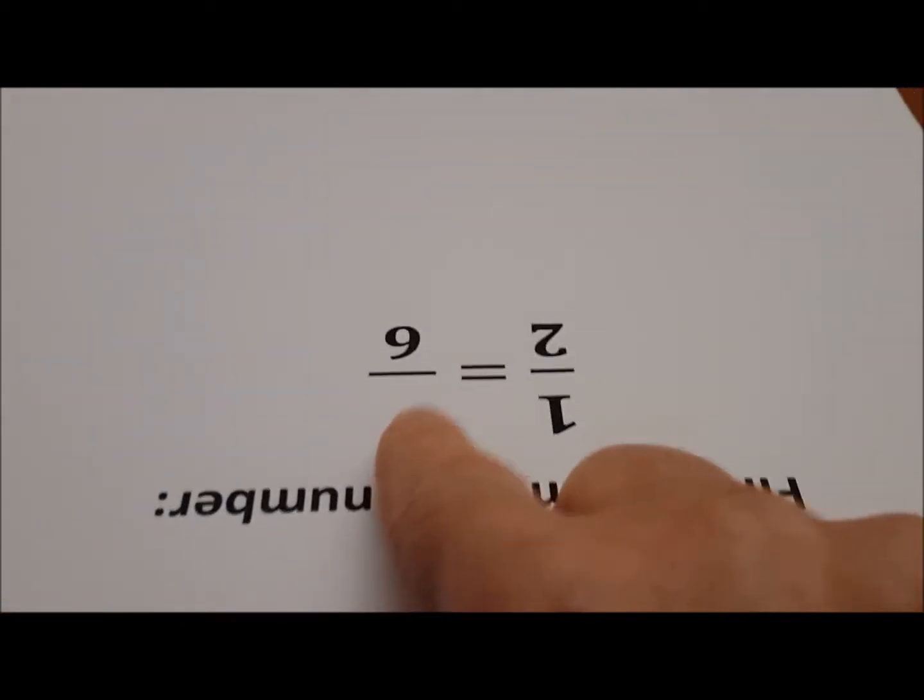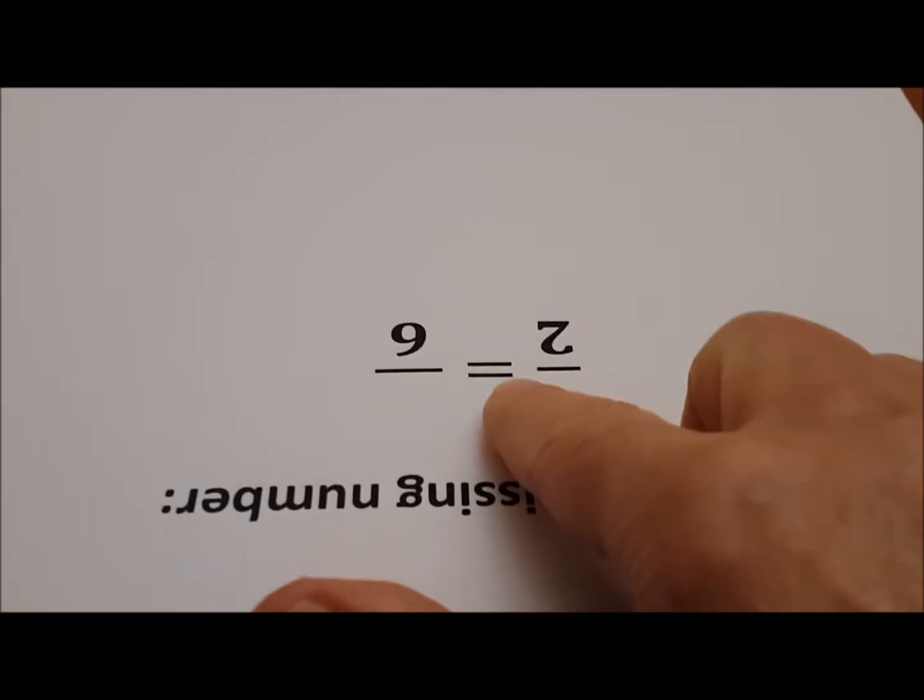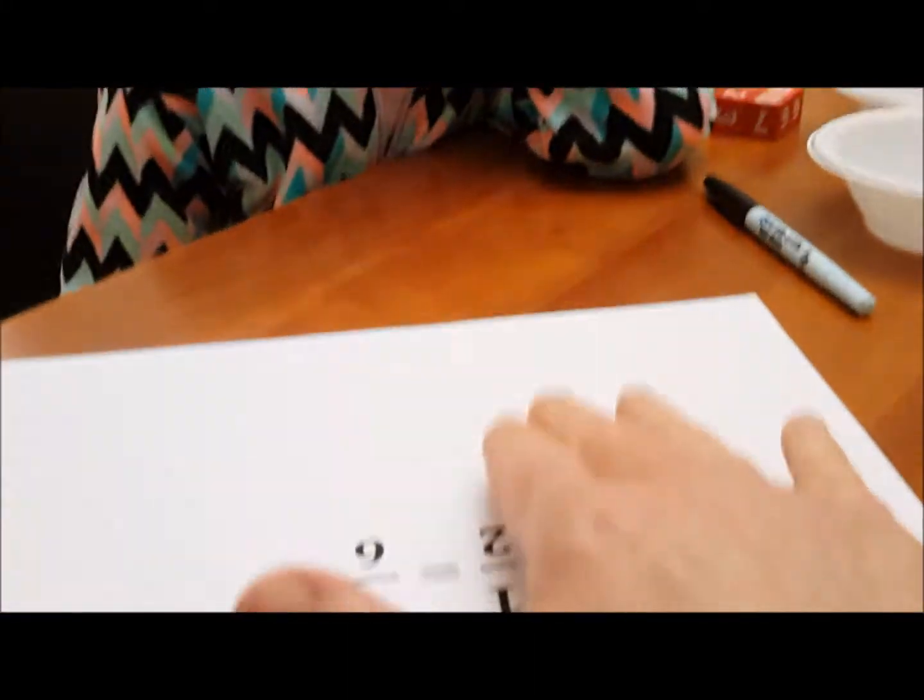Okay Raphael, I'd like you to help me with this problem. We need to find the missing number. The question is one half is equal to how many sixths. Do you know the answer to that? Okay, show me one half over here, use the blocks.